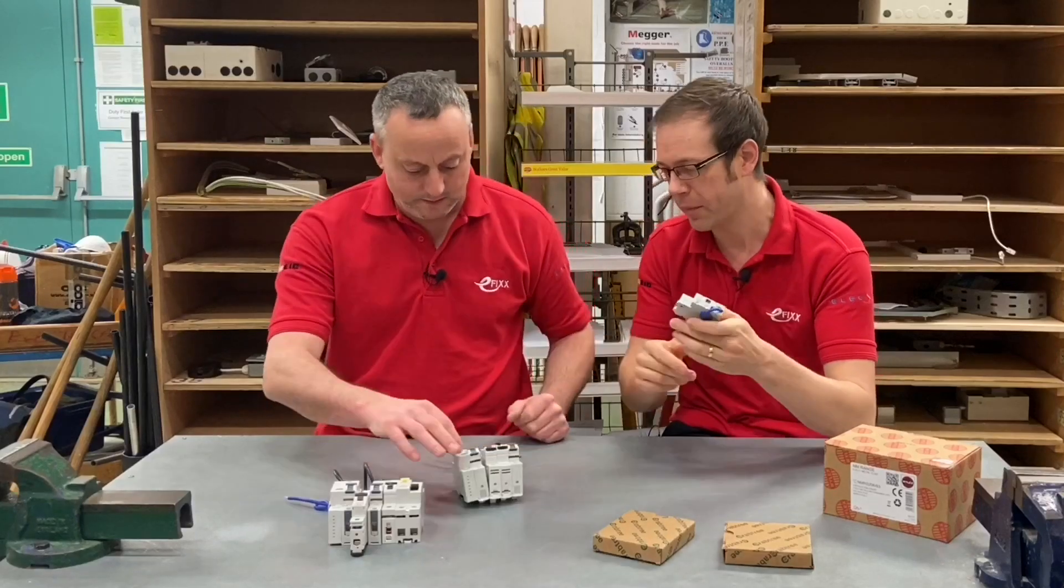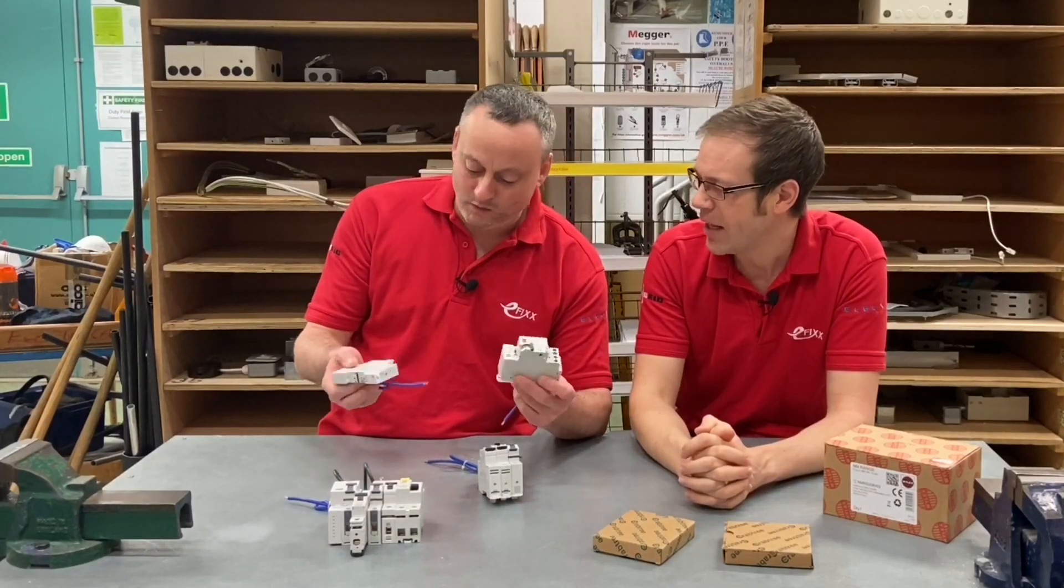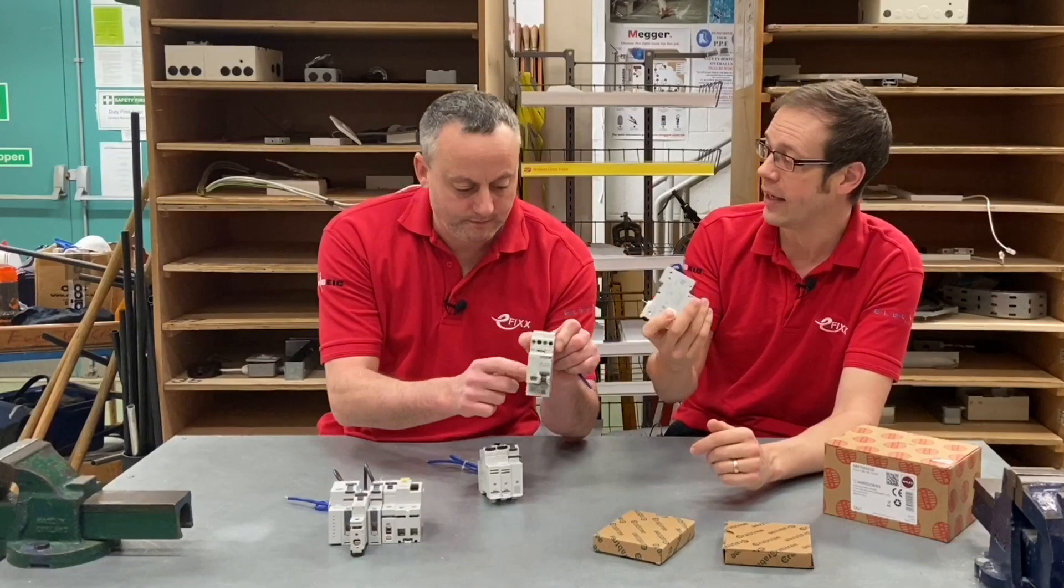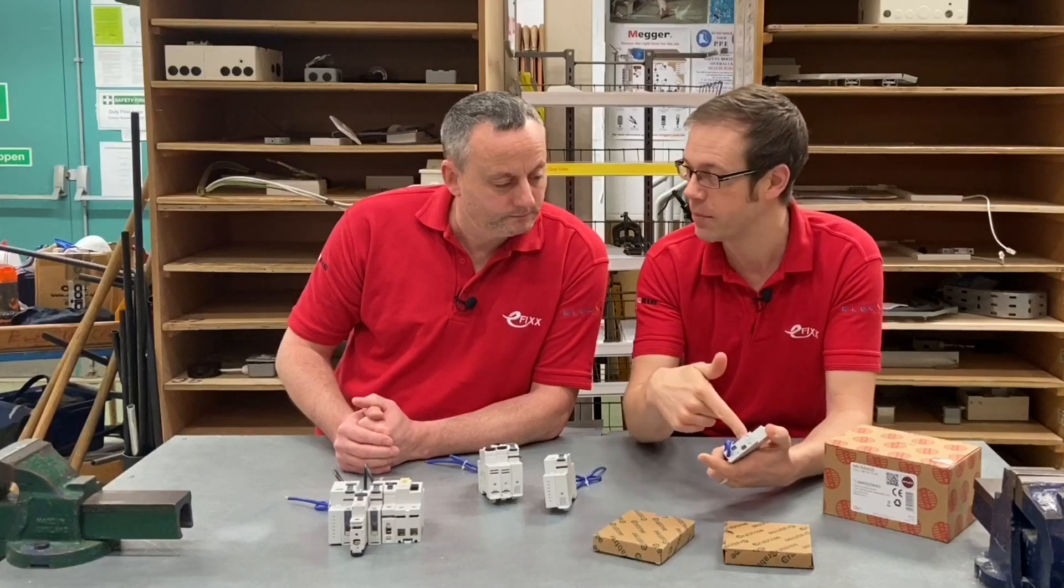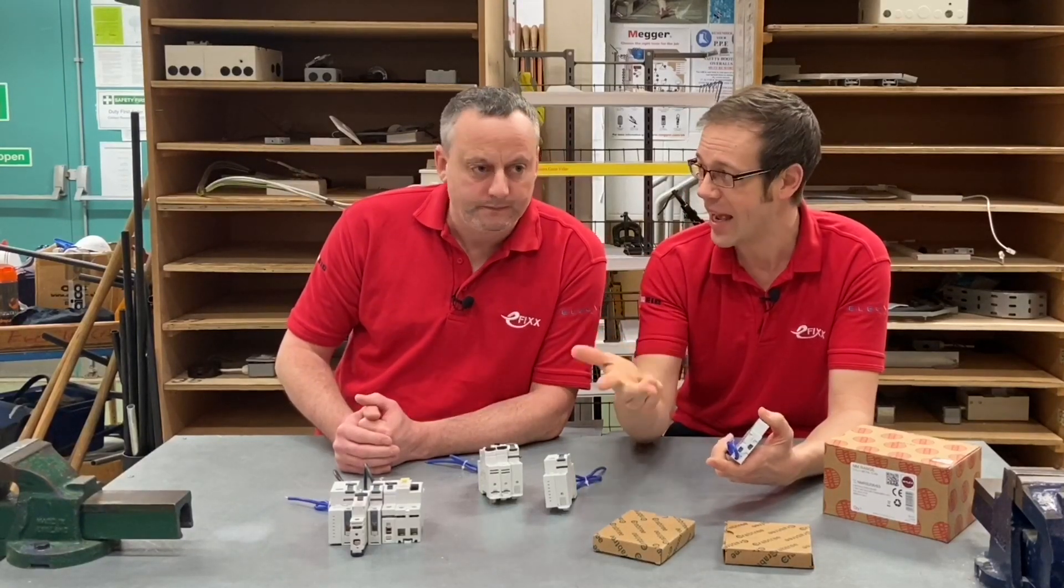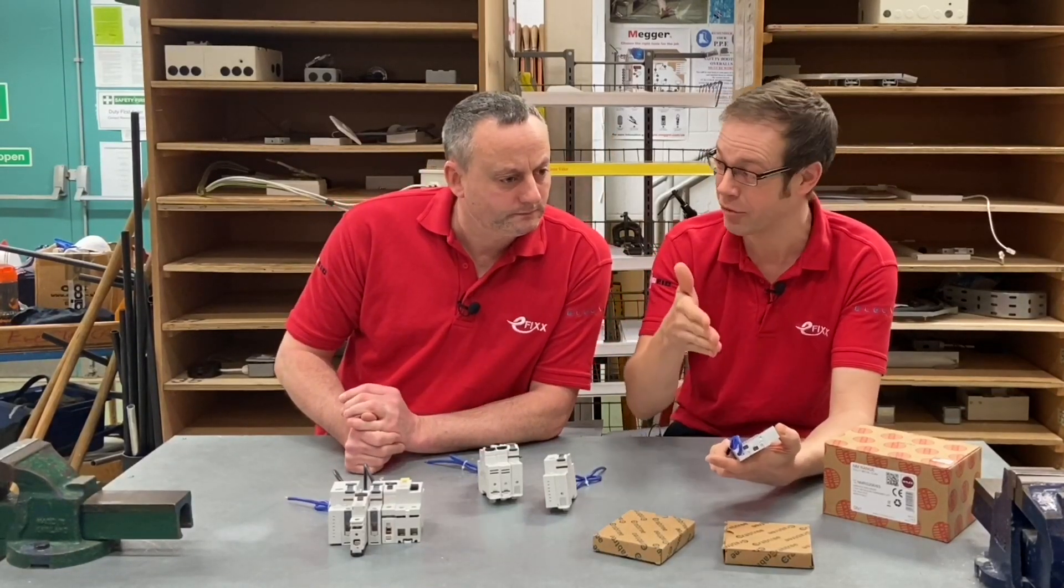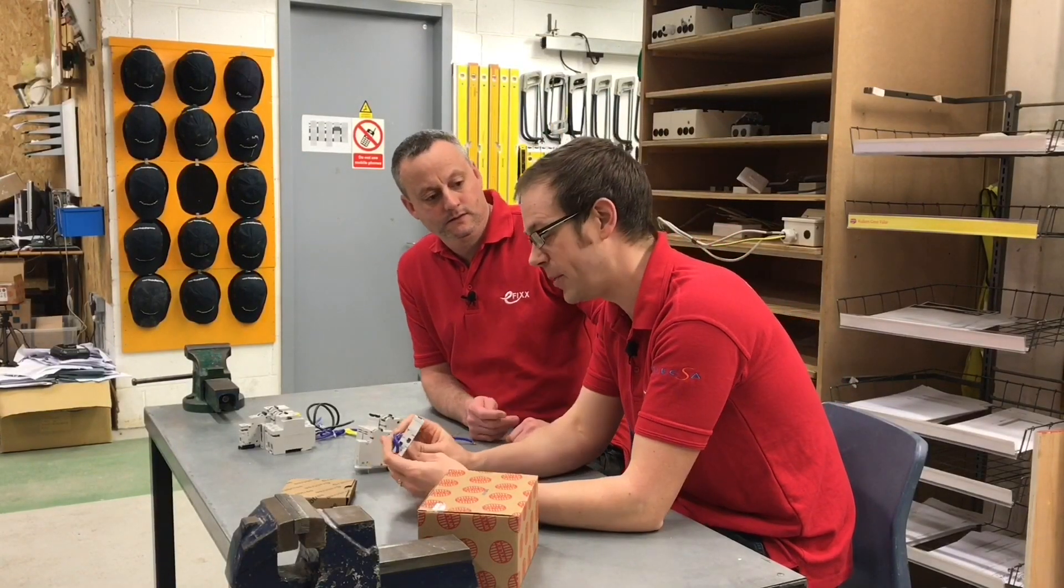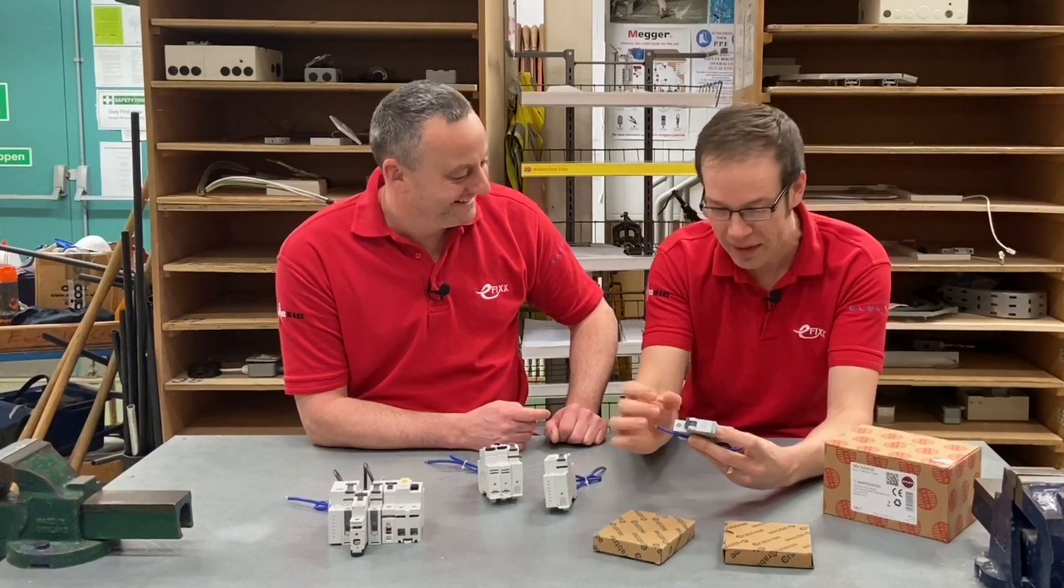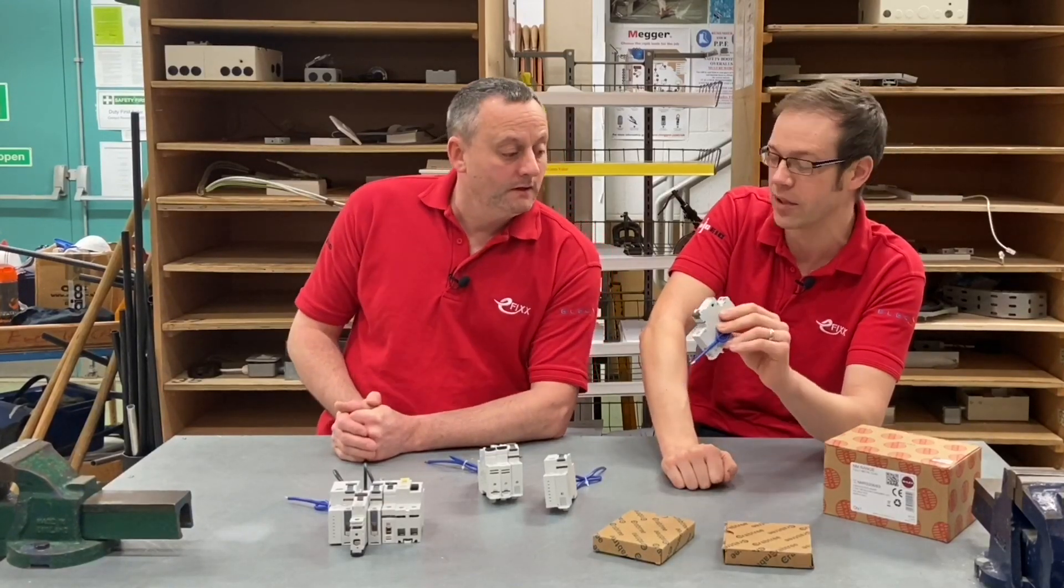Pick up that double module AFDD there. Now hold that one. Yours seems a little lighter, yeah, and that makes me really curious. I'm as curious to see what's not in here as much as I am what is in here, because I can't understand how they've managed to get in here all the bits and bobs you need for an MCB, an RCD, and an AFDD.